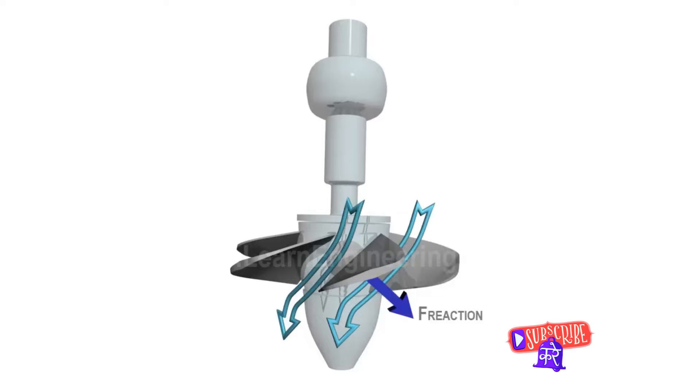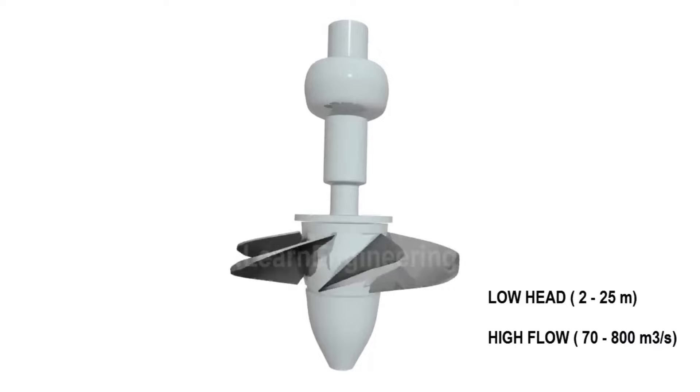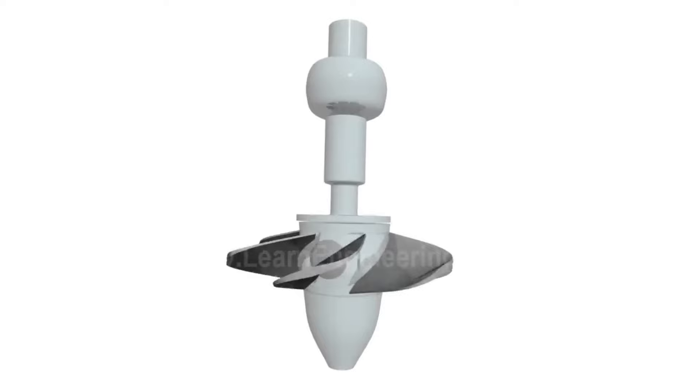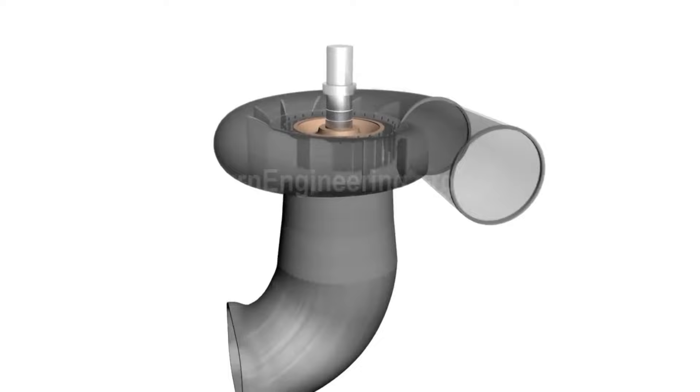Next up is the Francis turbine, a type of reaction turbine. Named after James B. Francis, this turbine operates by converting the water's pressure and kinetic energy into mechanical energy. The water enters radially and exits axially, creating a water vortex that spins the runner and generates power.